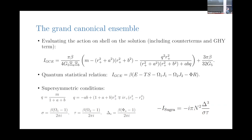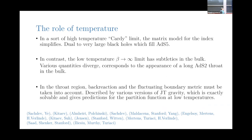On the black hole saddle, the saddle point equations tell you that the eigenvalues are distributed with some function of these parameters. If these parameters are complex, then the eigenvalue distribution is complex. So we really have analytically continued the matrix model computation.